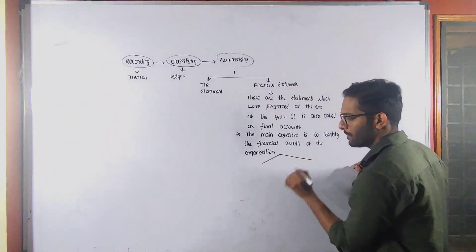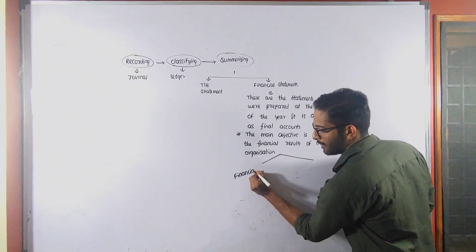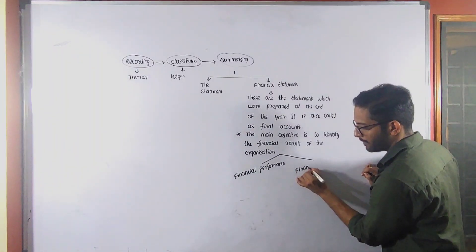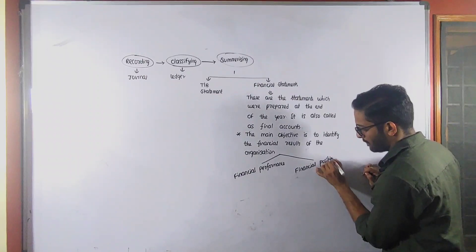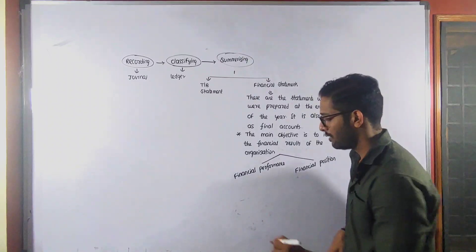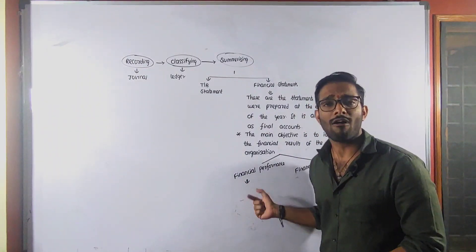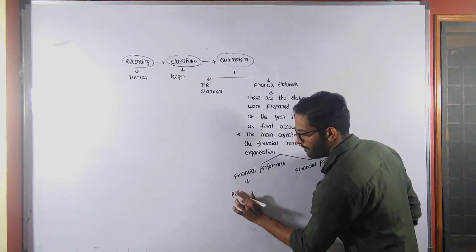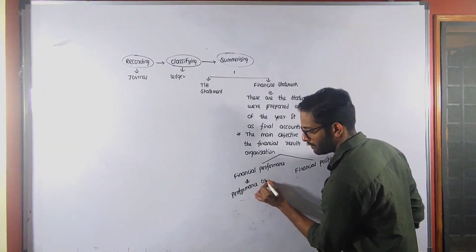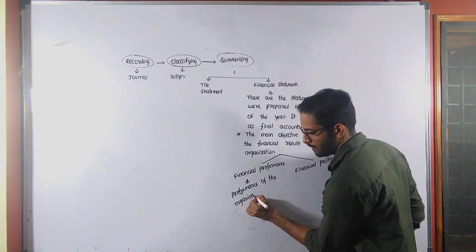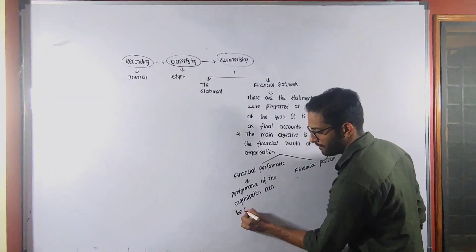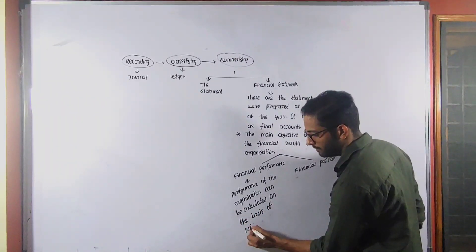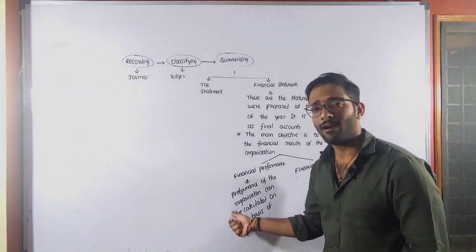The financial results include number one: financial performance, and number two: financial position. Financial performance means the performance of the organization can be calculated on the basis of net profit.